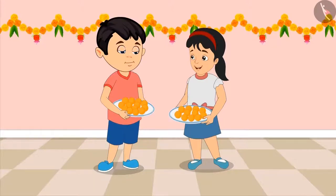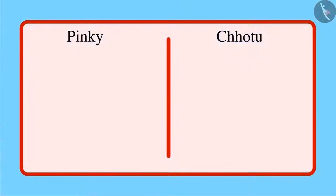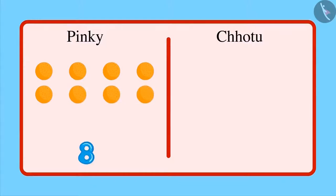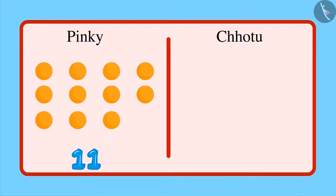Okay Chotu. Counting Pinky's sweets: 1, 2, 3, 4, 5, 6, 7, 8, 9, 10, and 11. There are 11 sweets in your plate.